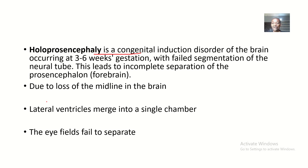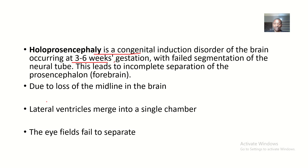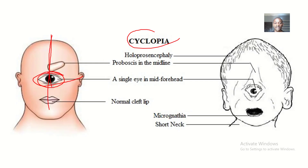Holoprosencephaly is a congenital induction disorder of the brain. It occurs between the third week to the sixth week of gestation — you are still an embryo, still developing. Within this period, if there is an abnormality, there will be holoprosencephaly. It is basically a failed segmentation of the neural tube.